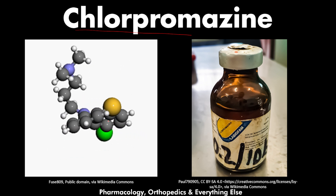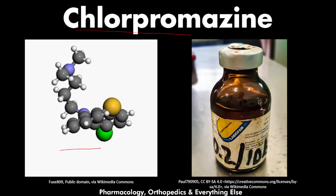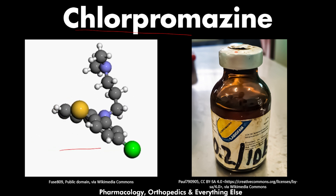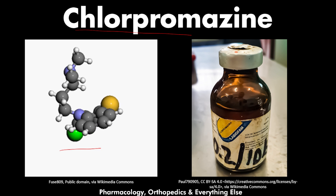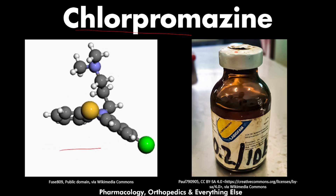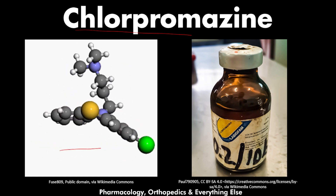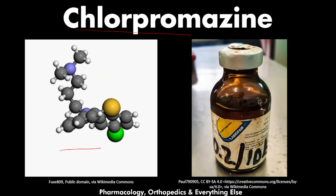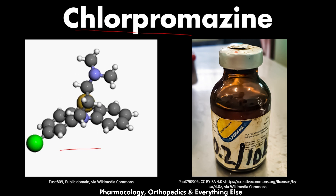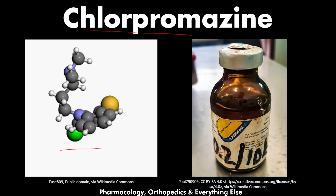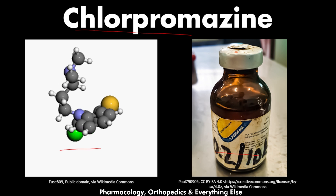Regarding the pictures: the image on the left shows the chemical structure of chlorpromazine. The black spheres represent carbon atoms, the white spheres are hydrogen atoms, the blue spheres are nitrogen atoms, the yellow sphere is the sulfur atom, and the green sphere is the chloride atom. The image on the right shows the oral formula of this medication.